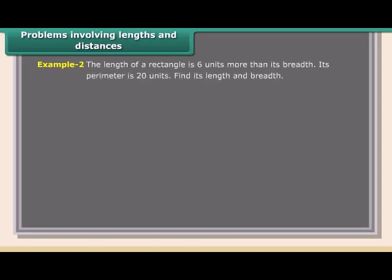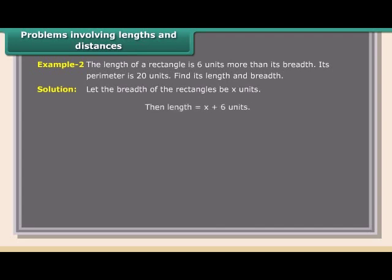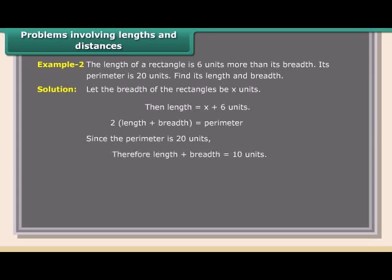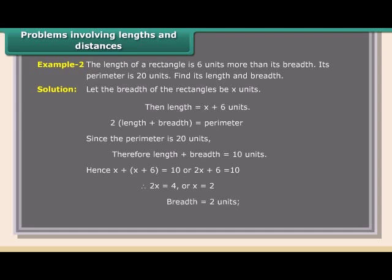Problems involving lengths and distances — Example: The length of a rectangle is 6 units more than its breadth and its perimeter is 20 units. Find its length and breadth. Let breadth = X units; length = X + 6 units. Perimeter = 2(length + breadth) = 20, so length + breadth = 10. X + X + 6 = 10; 2X = 4; X = 2. Breadth = 2 units, length = 2 + 6 = 8 units.